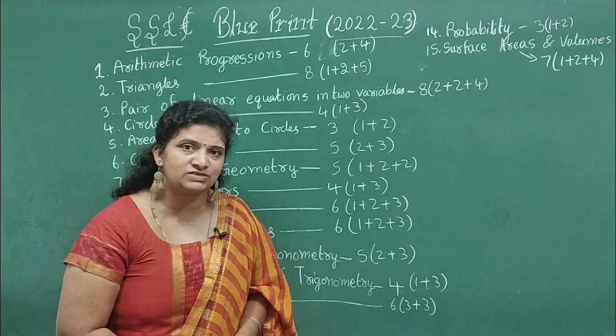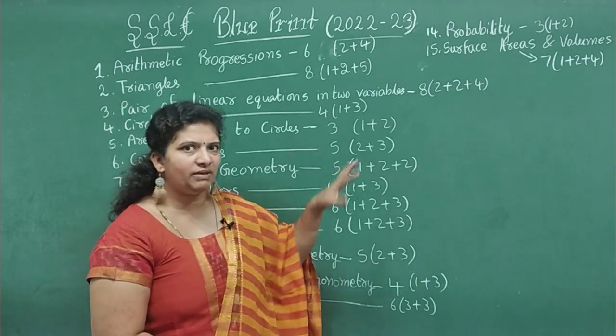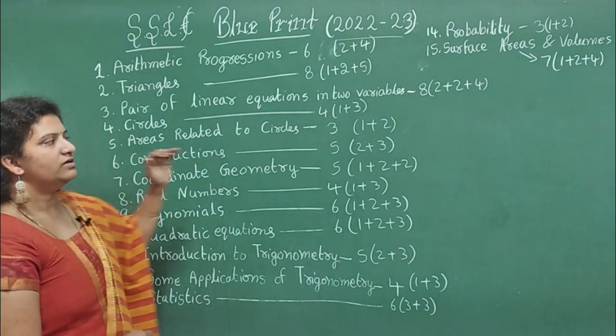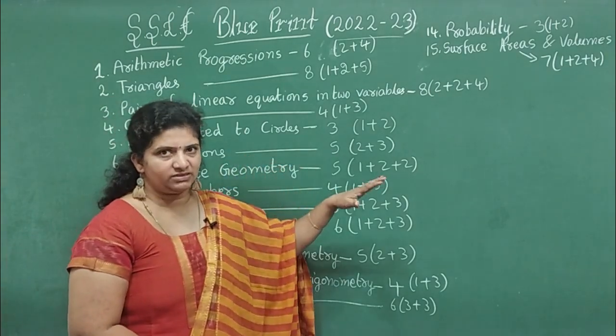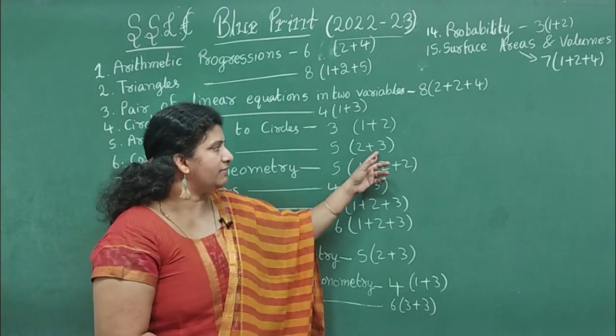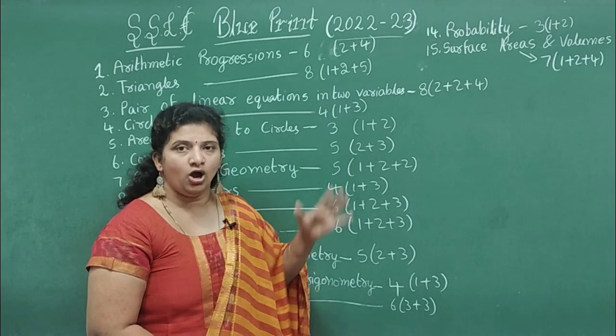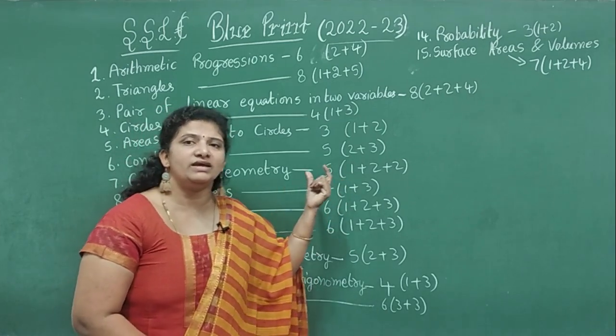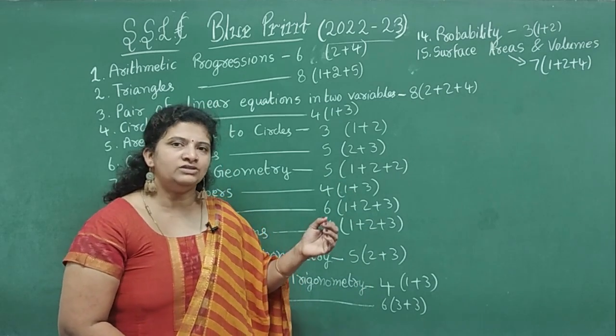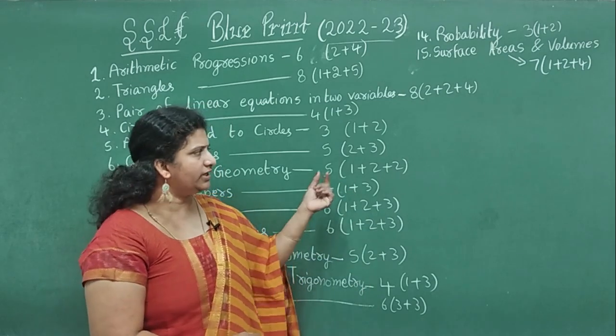Sixth chapter, Constructions - 5 or 6 marks. Either they may give you 2 marks for a line segment or a tangent, 3 marks similar triangle, or 3 marks external point tangent. Four marks they may ask similar triangle construction. So one mark may be varying here.